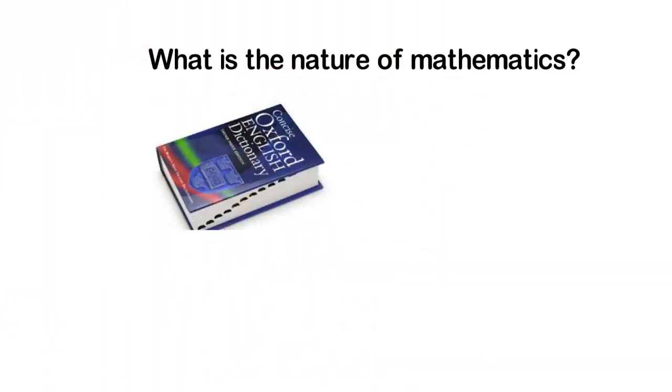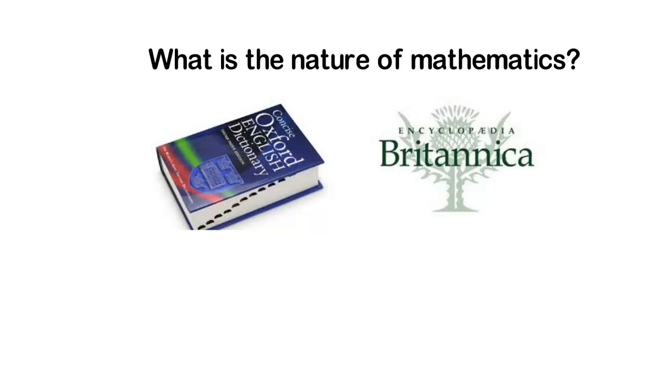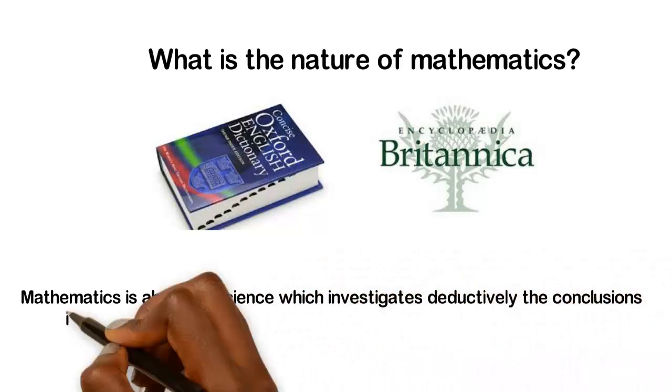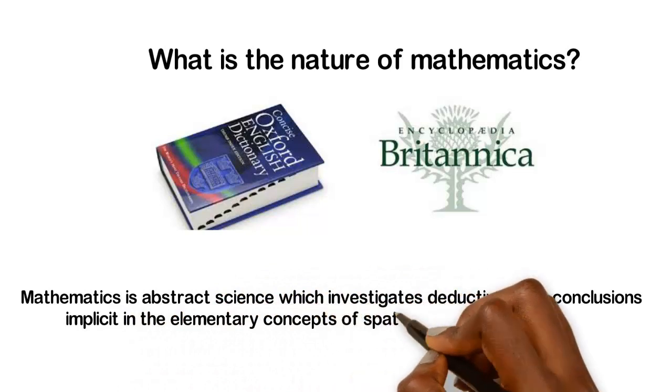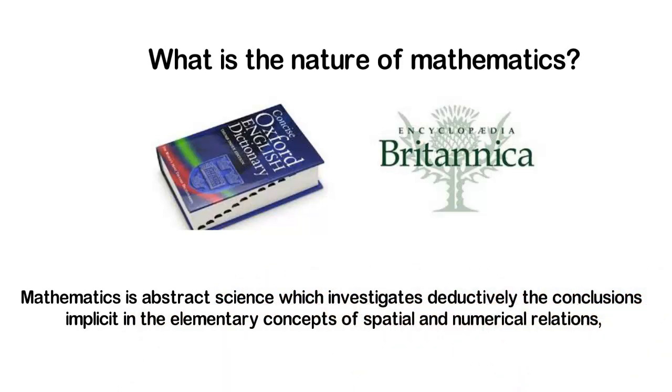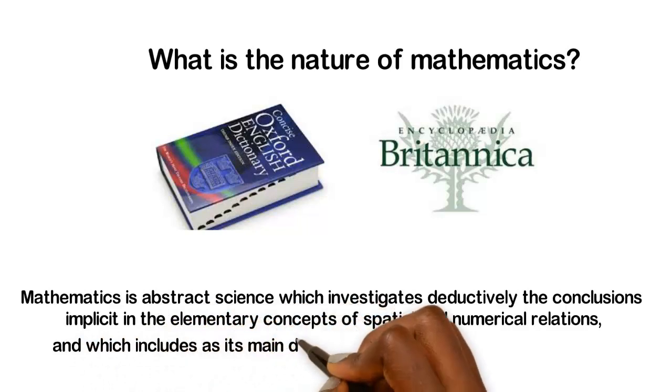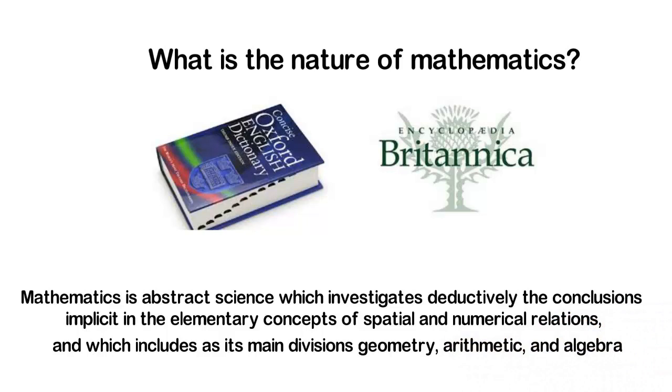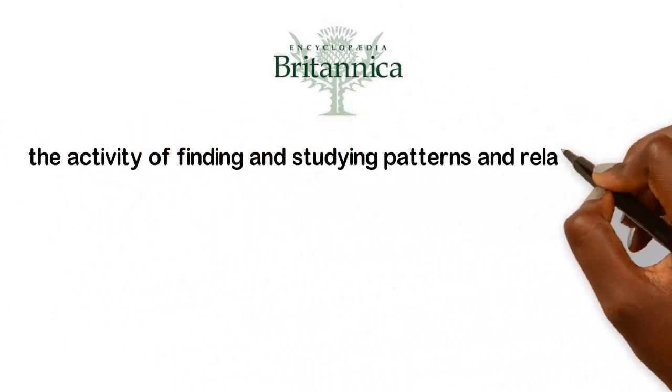The Oxford Dictionary and the Encyclopedia Britannica provide definitions and descriptions of the nature of mathematics. Mathematics, according to the Oxford Dictionary, is an abstract science which investigates deductively the conclusions implicit in the elementary concepts of spatial and numerical relations and which includes as its main divisions geometry, arithmetic, and algebra. Mathematics for the Encyclopedia Britannica is the activity of finding and studying patterns and relationships.